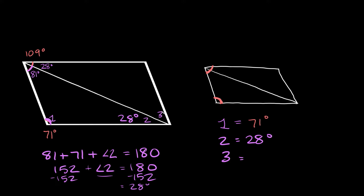To solve for angle 3, we can use opposite angles. This angle is equal to its opposite angle. Since we already have 28 matching up, that means the 81 would match up with angle 3, which would be 81 degrees. So angle 3 is equal to 81 degrees.